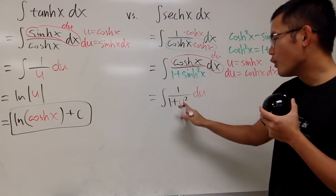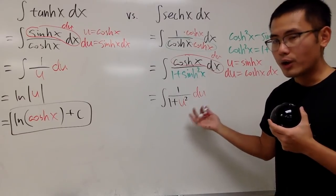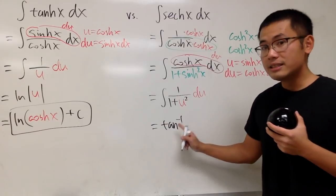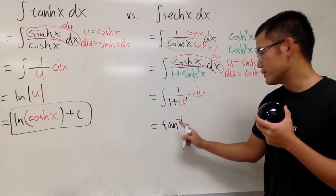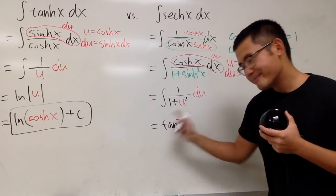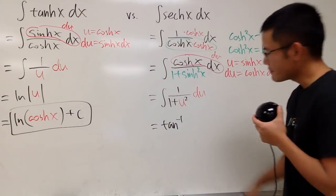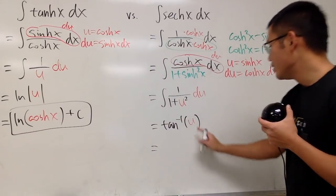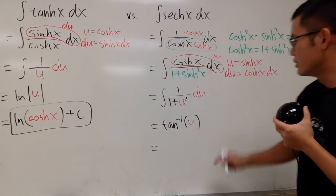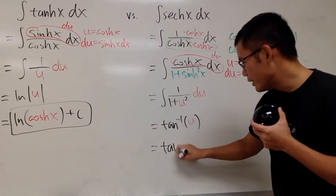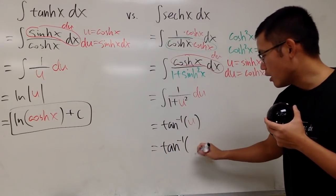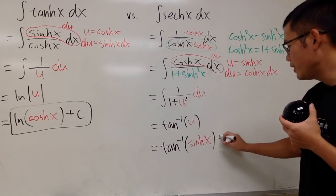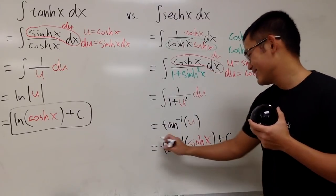Notice, this is the original version, the inverse tangent, the regular version. The input here is u. However, u is sinh, so just put that down. So in the end, we have inverse tangent of sinh x. And with that, we are done.